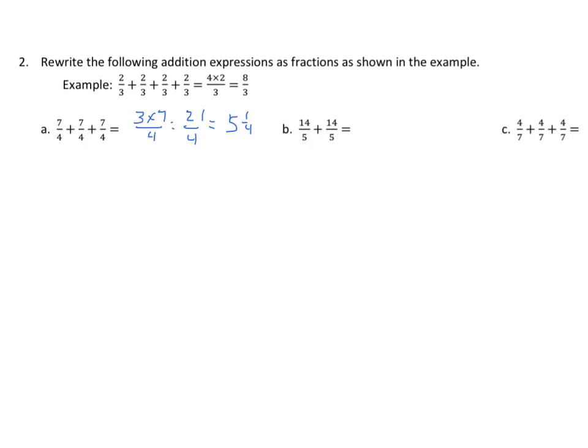We have 14 fifths plus 14 fifths. That's 2 times 14 over 5, which equals 28 fifths. And again, we can convert that to a mixed number if we like.